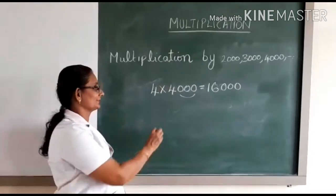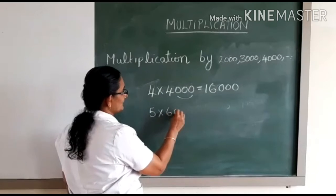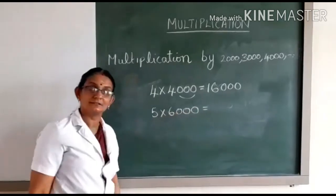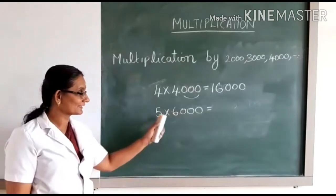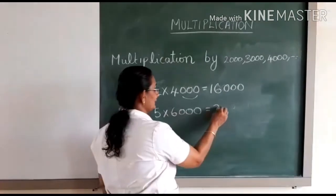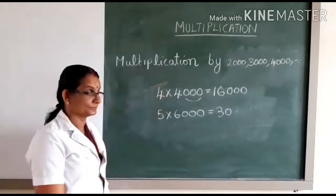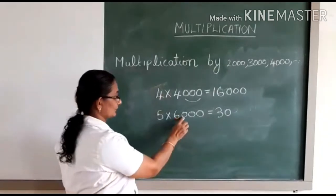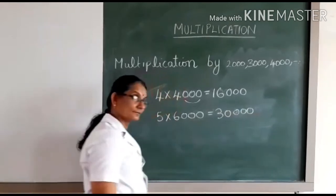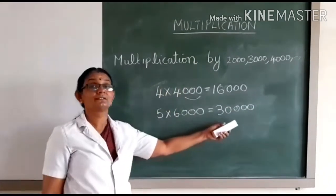Let us see another example: 5 into 6000. What is 5 into 6? It is 30. Then place three zeros to the right of the product. So the answer is 30,000.